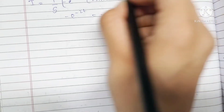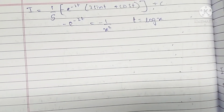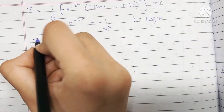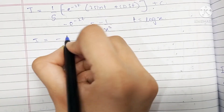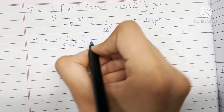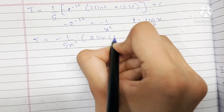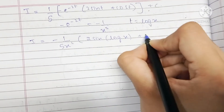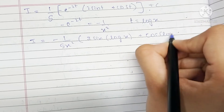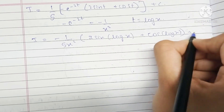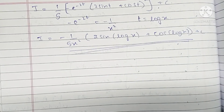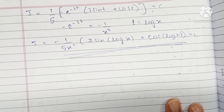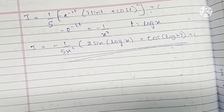Don't forget to write plus c, since we no longer have any integral term. So the final value of the integral i is minus 1 upon 5x squared times the quantity 2 sine log x plus cos log x, plus c. That's our final answer. Thanks so much for watching — I'll see you in the next video, bye!